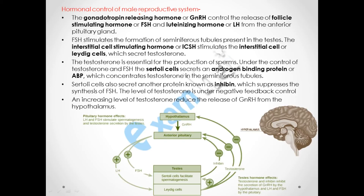Now we will discuss the hormonal control of the male reproductive system. The hypothalamus, situated in the brain, releases gonadotropin-releasing hormone (GnRH), which stimulates the anterior pituitary gland. The anterior pituitary releases two hormones: follicle-stimulating hormone (FSH) and luteinizing hormone (LH). FSH stimulates the Sertoli cells in the seminiferous tubules to facilitate spermatogenesis. LH stimulates the Leydig cells to release testosterone, and together testosterone and FSH produce sperm.